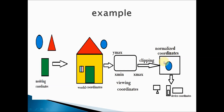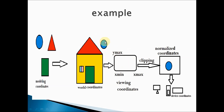Once the display area is selected, unwanted content is clipped away. The interested content — in this case the circle — is then properly mapped into the viewport. This mapping is handled by normalized coordinates. So: I selected my models, constructed the scene in world coordinates, selected the display area via viewing coordinates, clipped the unwanted parts, and then mapped the result into the viewport using normalized coordinates.